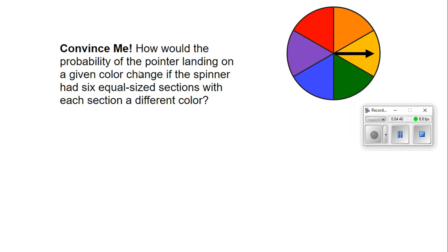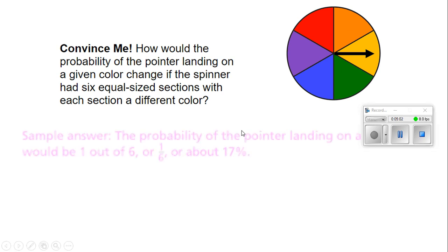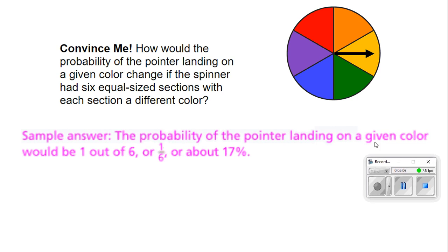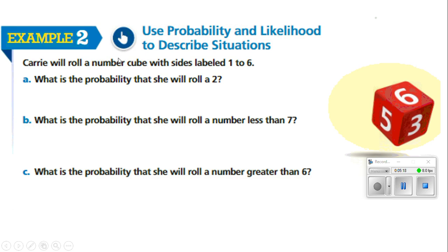How would the probability change if the spinner had six equal-size sections with each section a different color? If each section is a different color, the probability of landing on any given color would be one out of six, or one over six. One divided by six is about 17%.